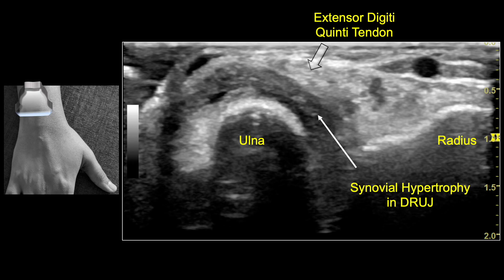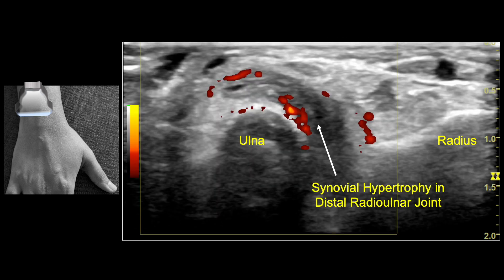The transverse image obtained at the level of the distal radio-ulnar joint shows synovial hypertrophy in the dorsal recess of the DRUJ. There is mild widening of the DRUJ space, with subtle dorsal subluxation of the ulnar head with respect to the lower end of radius. Power Doppler shows vascularity within the thickened synovium, corresponding to OMERACT grade 2.